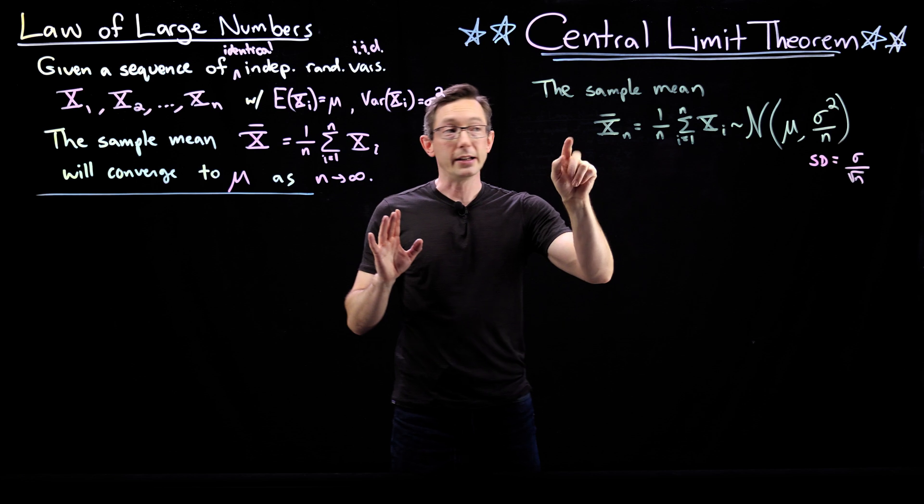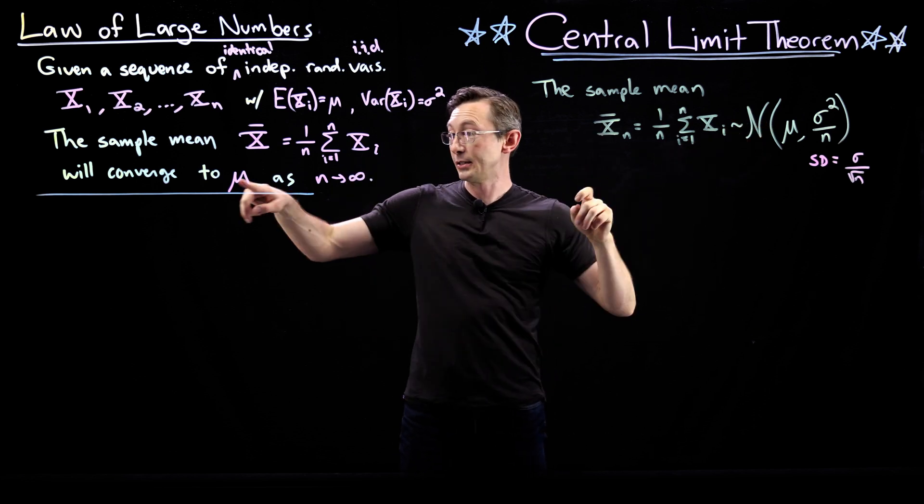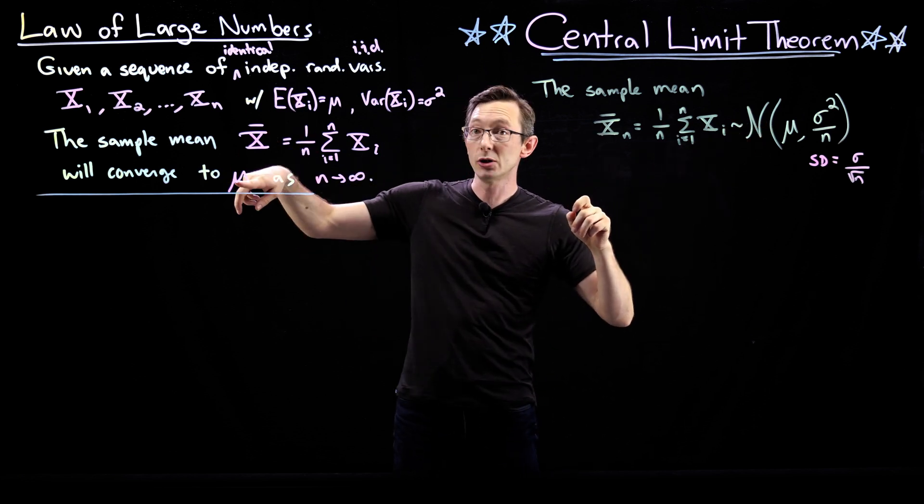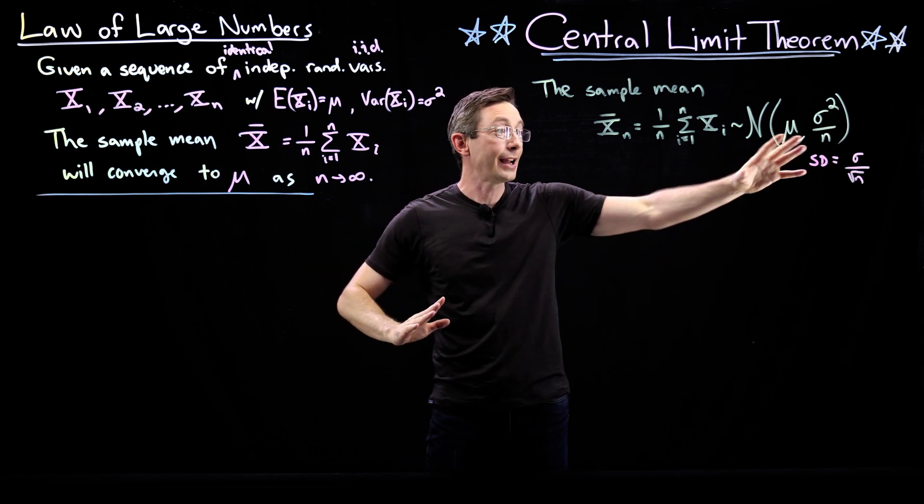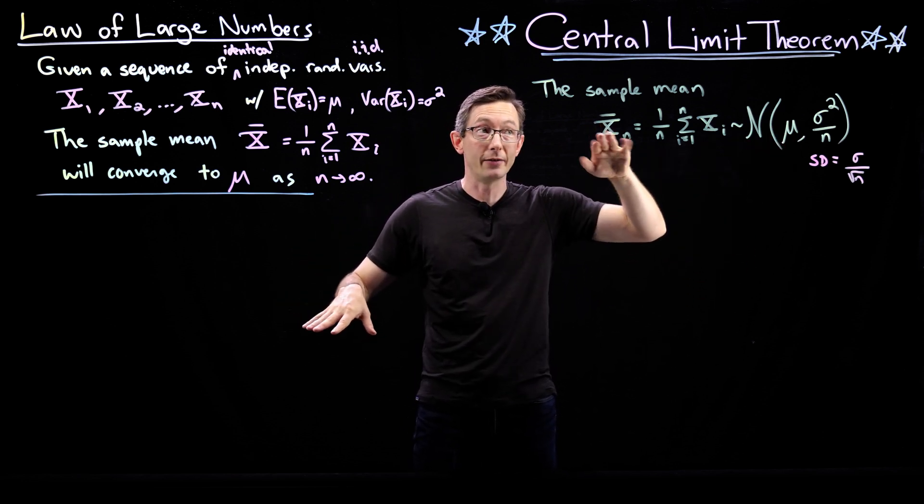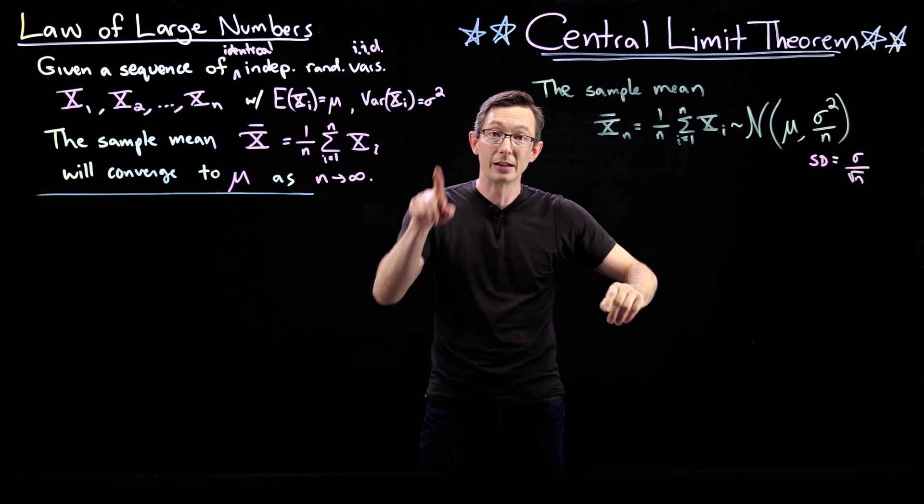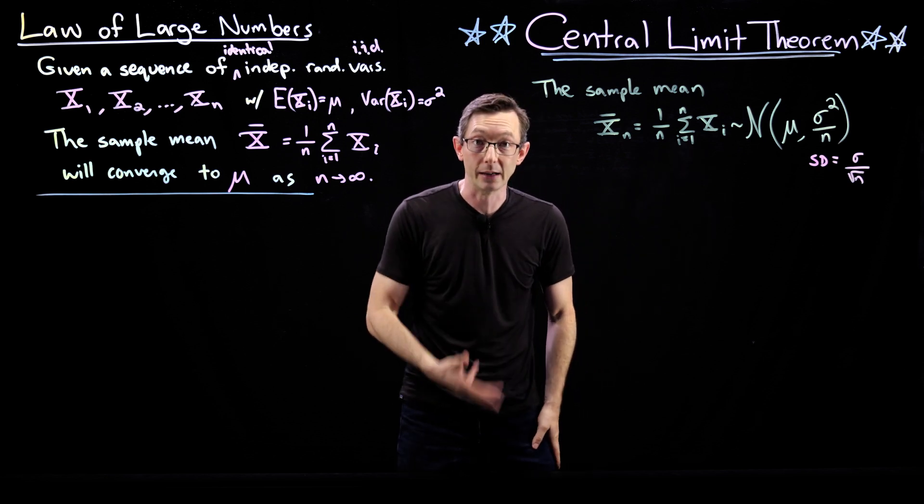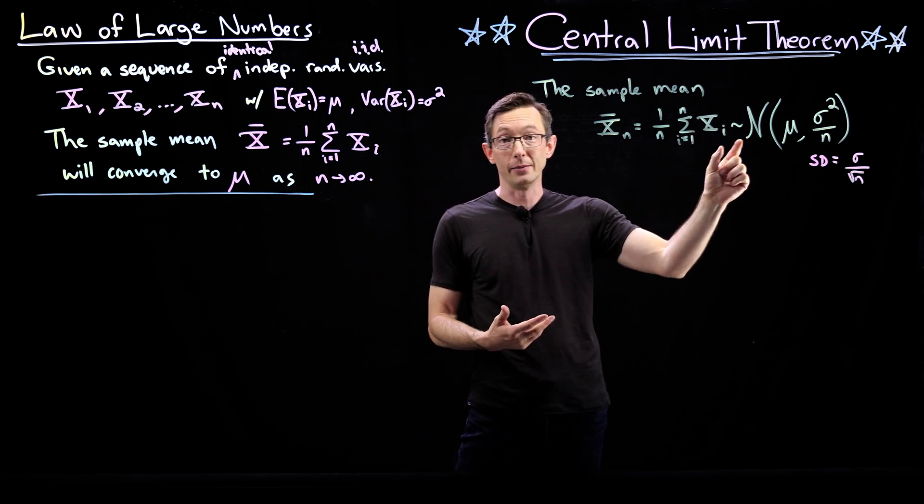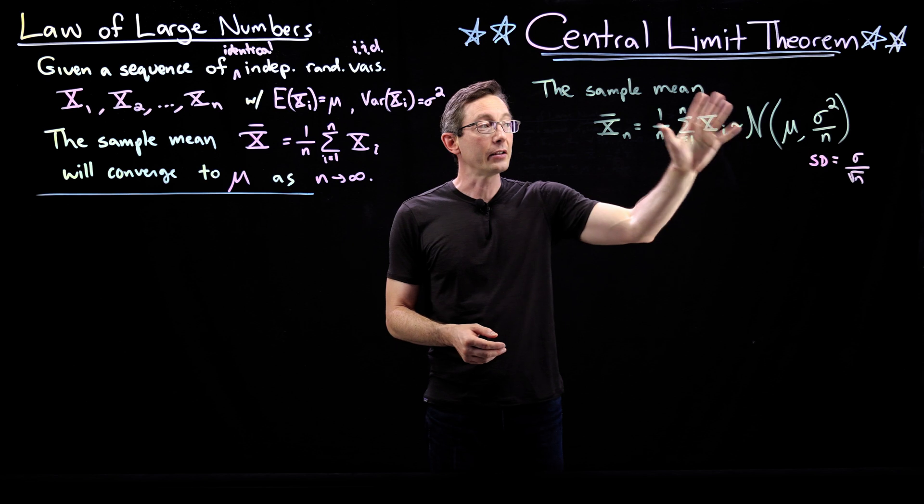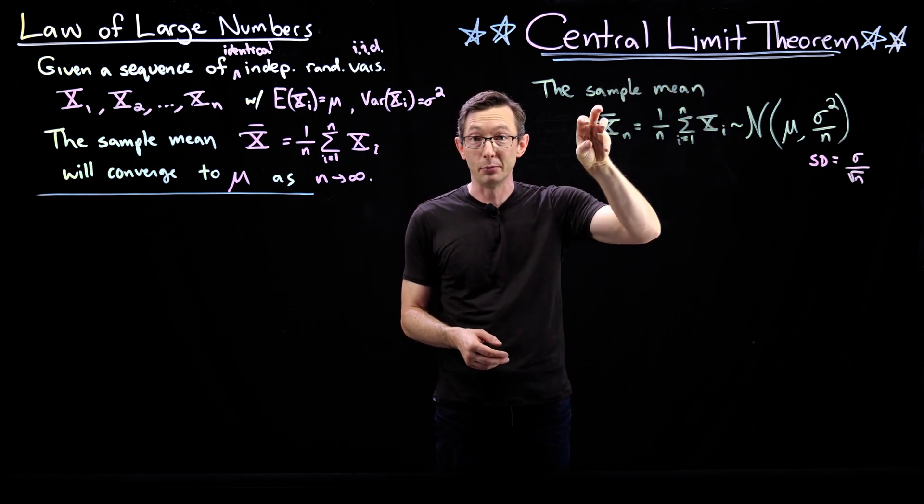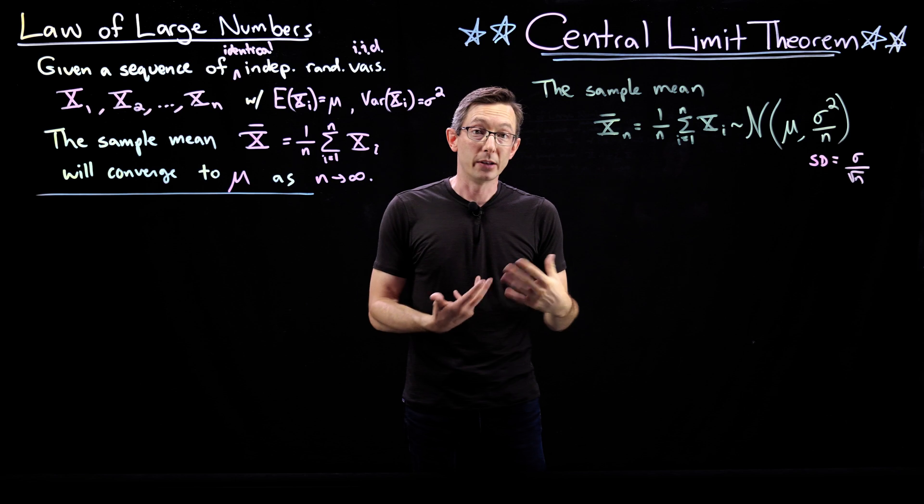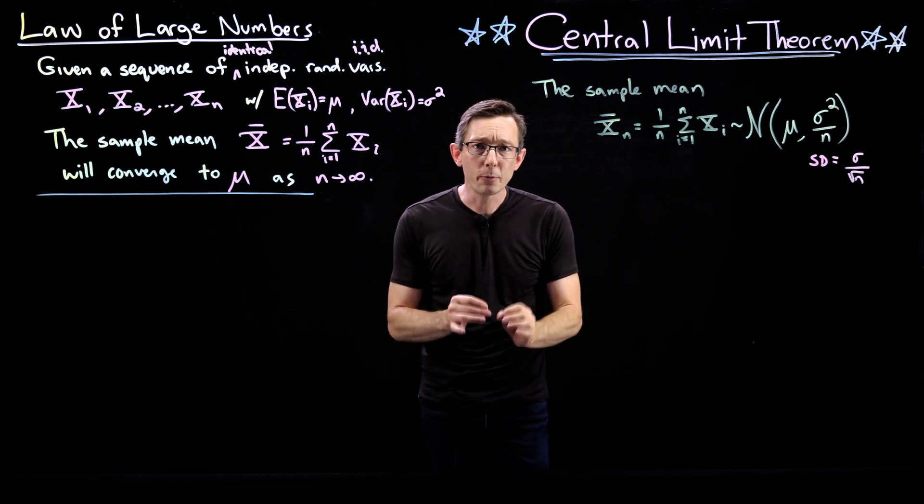It means that not only does the sample mean converge to the expected value of the distribution mu, but it does so in a way that as n gets large, this distribution of sample means will start to be distributed as a Gaussian random variable, as a normally distributed random variable. This gives you very, very tight estimates on how good your estimate of the sample mean is when you're dealing with data. And this is super important.